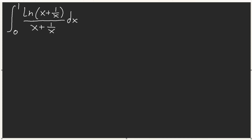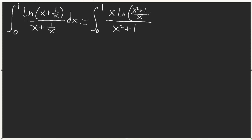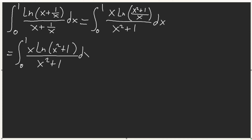We have a very intimidating integral from Cambridge University Integration Bee. How do we deal with this? Don't freak out — let's take small steps. Let's multiply top and bottom by x. That's our first instinct: x² + 1, then x, and simplifying gives us x²/(x² + 1) over x. We can split this integral.